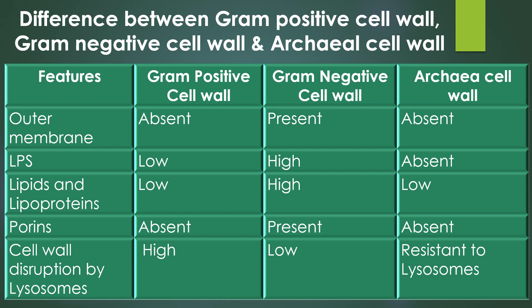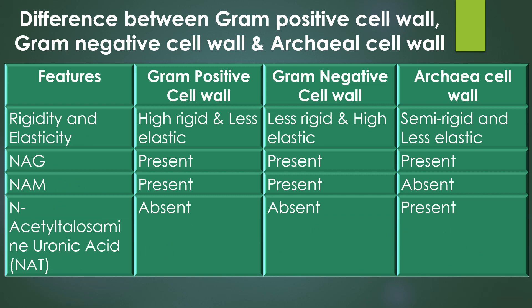Porins are present only in gram-negative cell wall and absent in both gram-positive and archaea cell walls. Cell wall disruption by lysozyme is very high in gram-positive cell wall and low in gram-negative cell wall; archaea cell walls are completely resistant to lysozyme. Regarding rigidity and elasticity: gram-positive cell wall is highly rigid and less elastic; gram-negative cell wall is less rigid and highly elastic; and archaea cell wall is semi-rigid and less elastic.